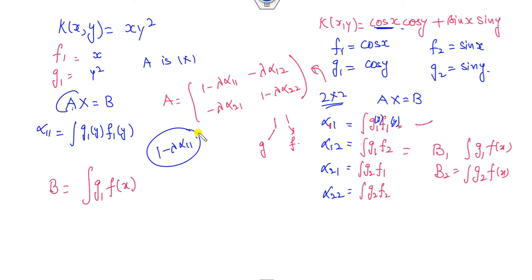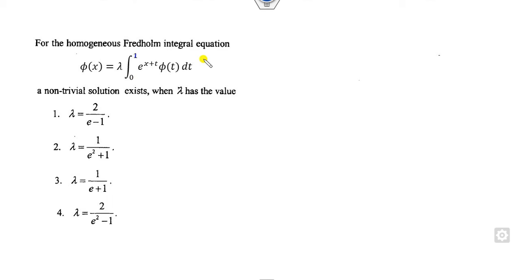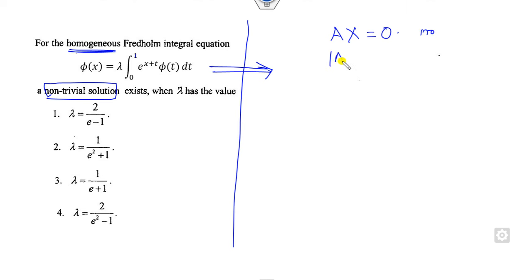Now let's start solving. The limits are constant so this approach applies; it is homogeneous so we convert to AX = 0. For non-trivial solution, det(A) = 0. The kernel is K(x,t) = eˣ · eᵗ, so F1 = eˣ, G1 = eᵗ. Then α₁₁ = ∫₀¹ eᵗ · eᵗ dt = (e² − 1)/2. Setting det(I − λα₁₁) = 0 gives λ = 2/(e² − 1).